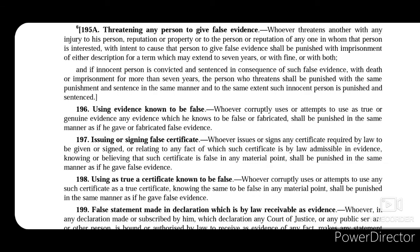Section 195A talks about threatening any person to give false evidence. If a person threatens another person that they must give false evidence or face serious consequences, and that person gives false evidence due to such threatening, then the person who made the threat will be punished with imprisonment for a term which may extend to 7 years, or with fine, or with both. And if any innocent person is convicted and sentenced in consequence of such false evidence with death or imprisonment for more than 7 years, then the person who threatened shall be punished with the same punishment as that innocent person.